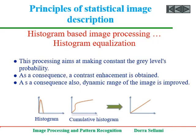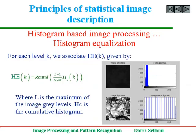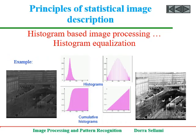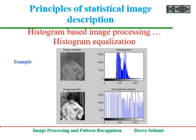Histogram equalization is a histogram-based image processing algorithm that aims at making constant the grey level probability. As a consequence, contrast enhancement is obtained and the dynamic range of the image is improved. The algorithm associates to each level k a new level he(k), given by the equation involving L, the maximum grey level, and hc, the cumulative histogram. An example shows histogram equalization applied to a very dark, poorly contrasted image — the equalized image is significantly improved in contrast and all details are distinguishable. Another example confirms that all details appear better in the equalized version.